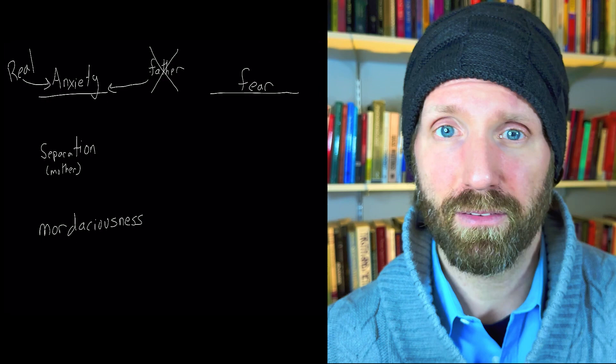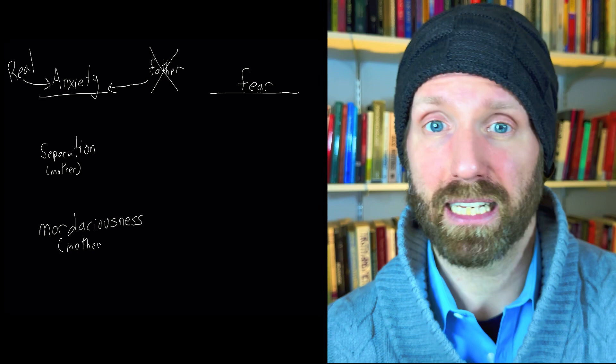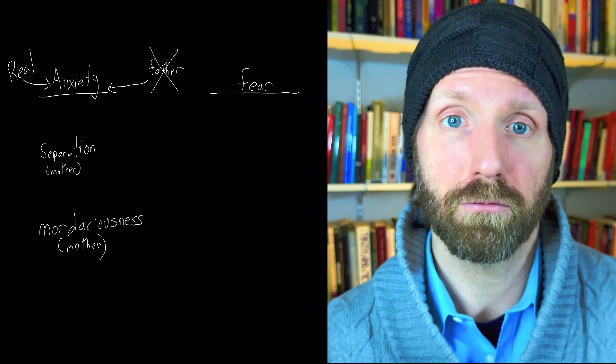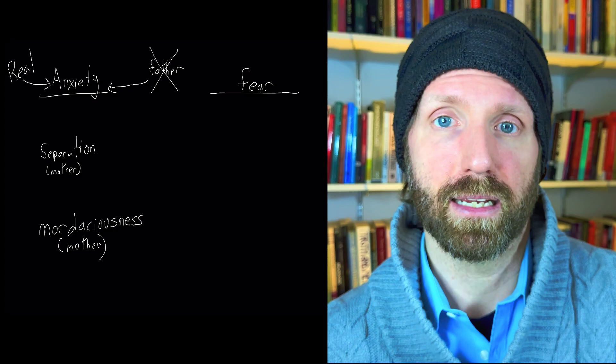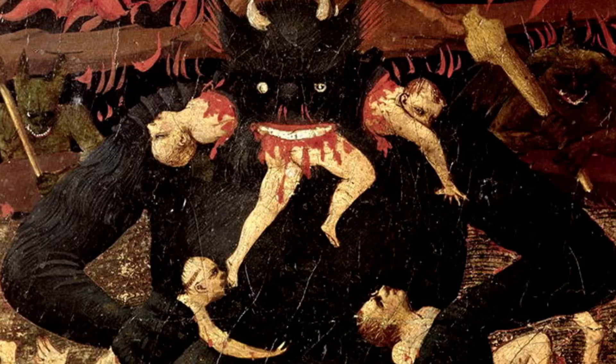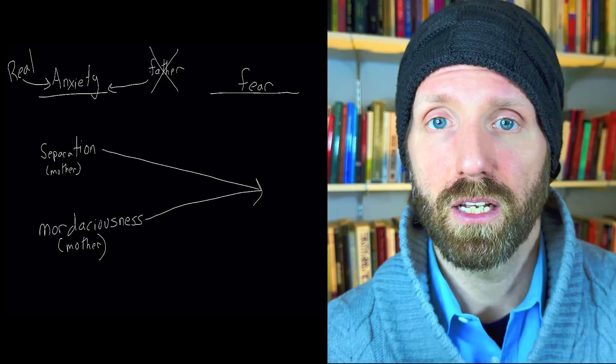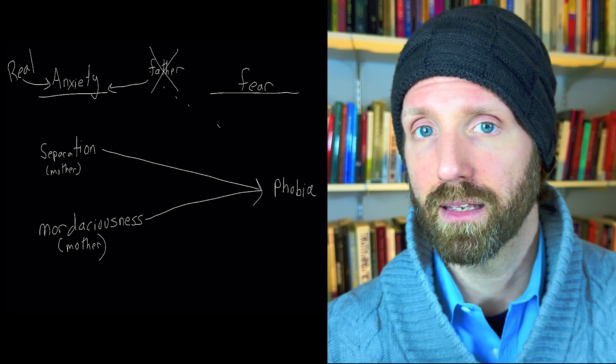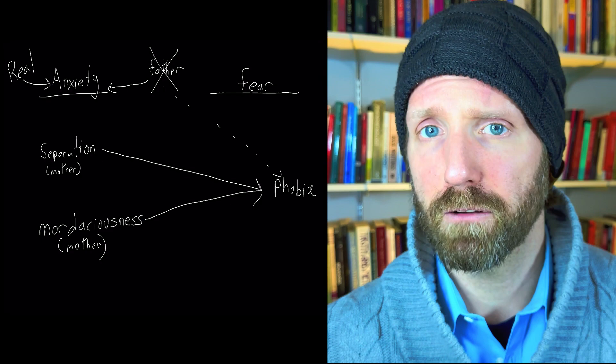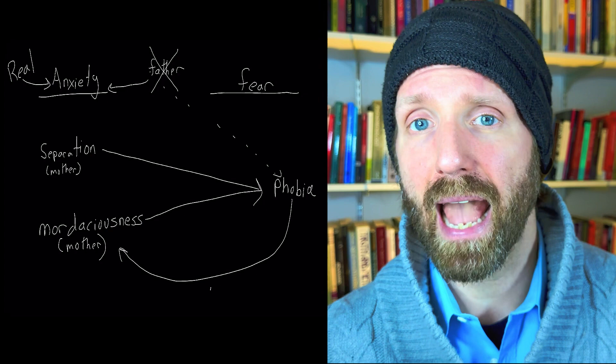For if the mother is fully realized as the desiring agent herself for having been deprived of the phallus, and if Hans himself does not possess such a phallus adequate for satisfying the mother, then he not only faces the possibility of separation in her abandoning him, but also her wrath for failing to satisfy her. This is what Lacan calls the mordaciousness or voraciousness of the mother. So there is a dual threat of separation and devoration, and these are the conditions that set the stage for the emergence of the phobic object, which fulfills a function against the backdrop of anxiety.